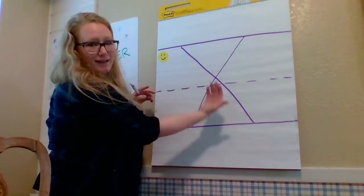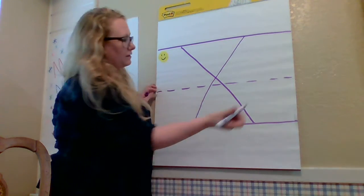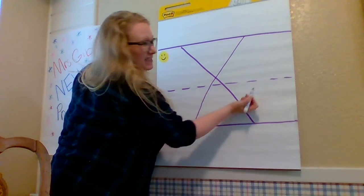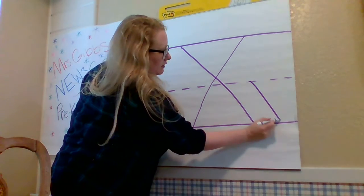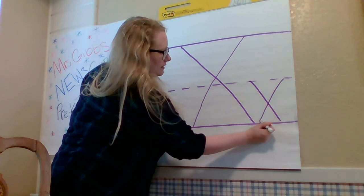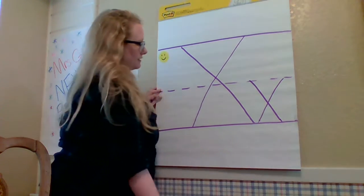So that is how you make the letter X. And if you want to make a little one, you start at the top, but it's going to be little. And it's the same thing. You just have two short diagonal lines.